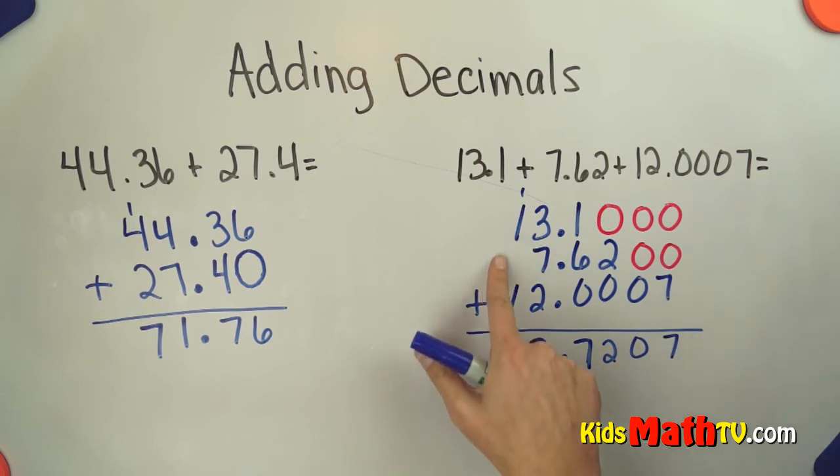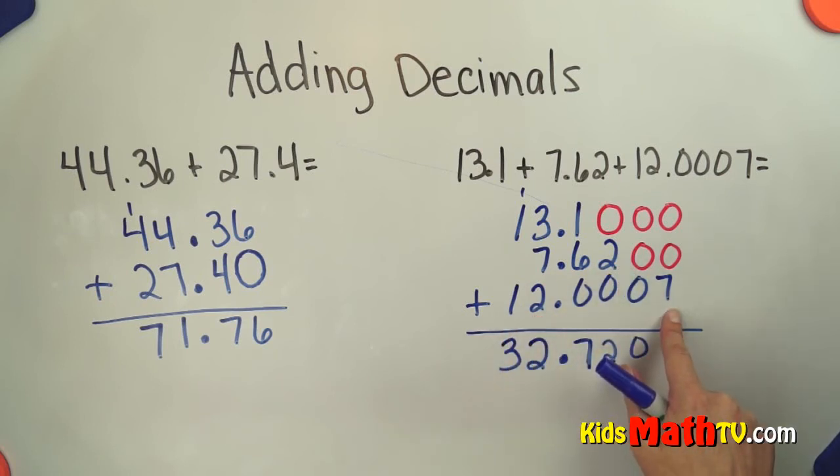So 13 and 1 tenths added to 7 and 62 hundredths added to 12 and 7 ten thousandths gives you 32 and 7, 207 ten thousandths.